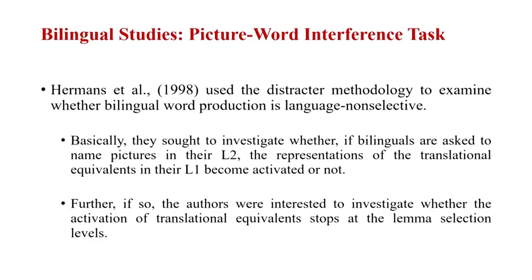One key study was conducted by Hermans and colleagues in 1998, who used the distractor methodology to examine whether bilingual word production is language non-selective. They sought to investigate whether, when bilinguals are asked to name pictures in their L2, the representations of the translational equivalent in their L1 also become activated. For example, if you are asked to name a bunch of fruits in English, do their Hindi names also get activated while trying to name the pictures in L2?